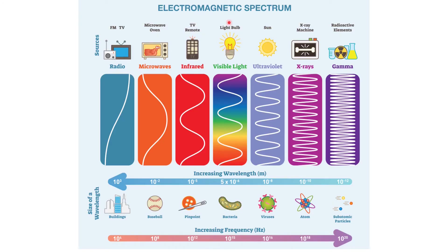Now, what is the electromagnetic spectrum? The electromagnetic spectrum is a combination of rays: radio waves, microwaves, infrared rays, visible light, UV light, X-rays, and gamma rays. As we move from radio waves to gamma rays, frequency is increasing. Since energy is directly proportional to frequency, energy is also increasing in that direction. Conversely, as we move from gamma rays to radio waves, the wavelength is increasing.